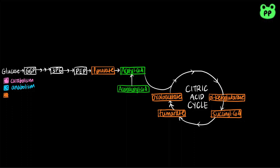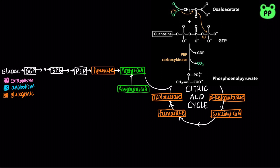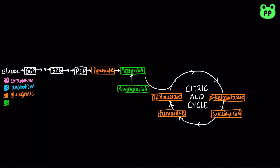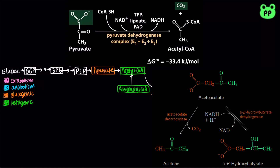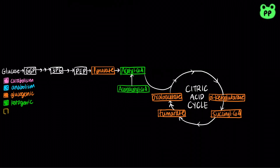Glucogenic amino acids can be degraded to pyruvate, alpha-ketoglutarate, succinyl-CoA, fumarate, and/or oxaloacetate, shown in orange. Since oxaloacetate can be reconverted to phosphoenolpyruvate by phosphoenolpyruvate carboxykinase, glucogenic amino acids can be reconverted to glucose through gluconeogenesis. On the other hand, ketogenic amino acids can be degraded to acetyl-CoA and/or acetoacetyl-CoA, shown in green, which can be converted to ketone bodies in the liver. Note that since pyruvate dehydrogenase is irreversible, acetyl-CoA and acetoacetyl-CoA cannot be reconverted to glucose. The third type of amino acid is both glucogenic and ketogenic, shown in tan.